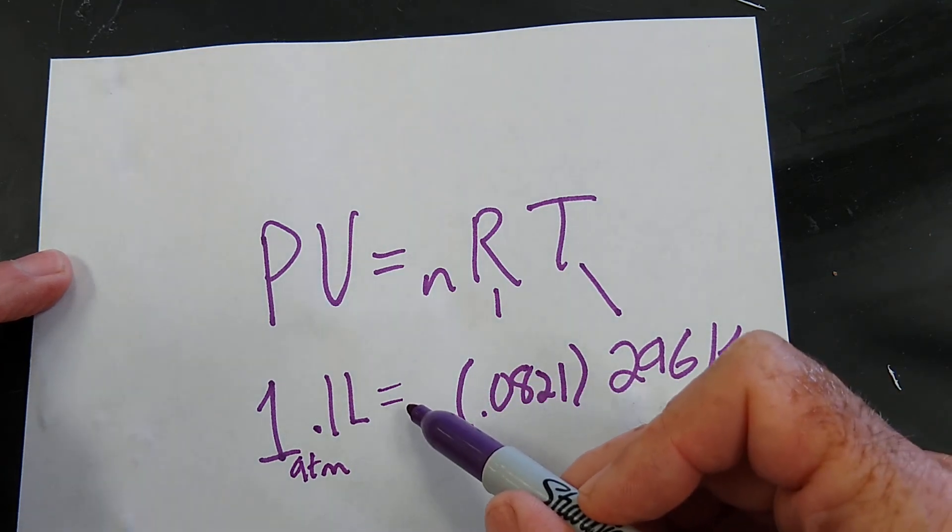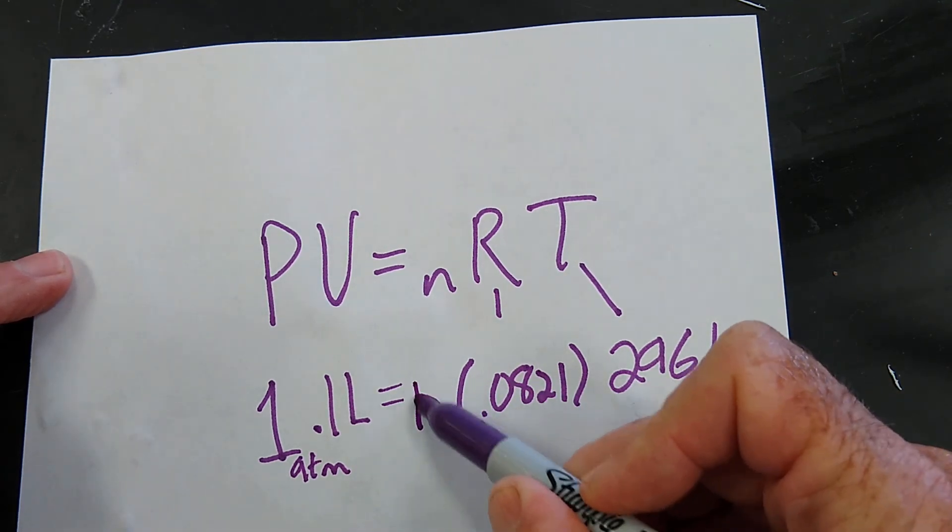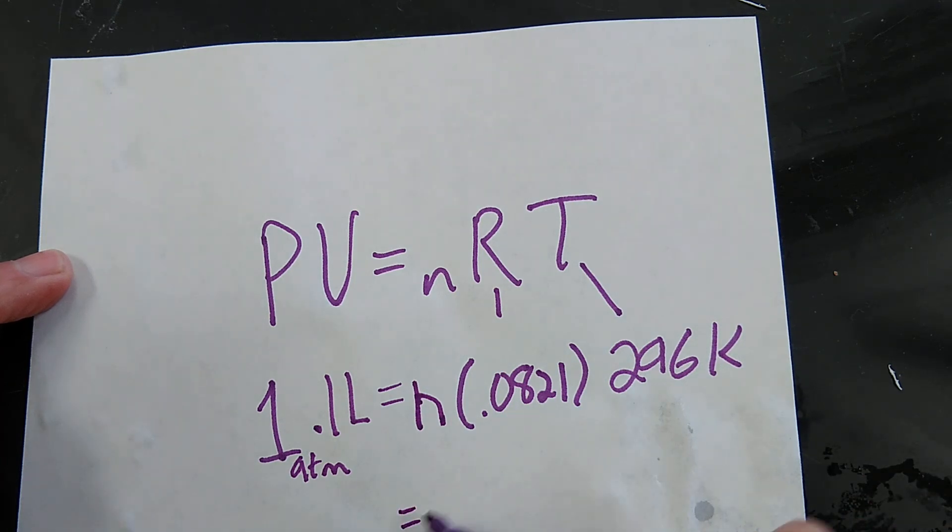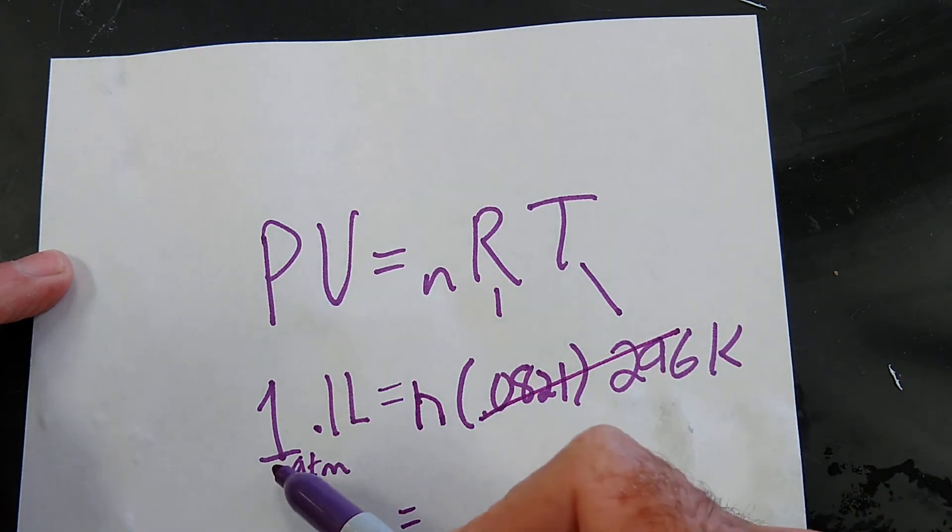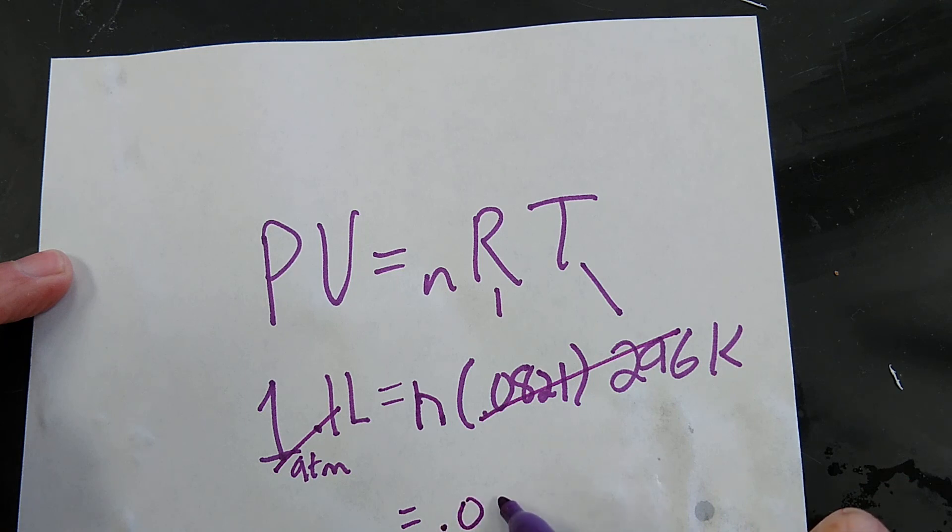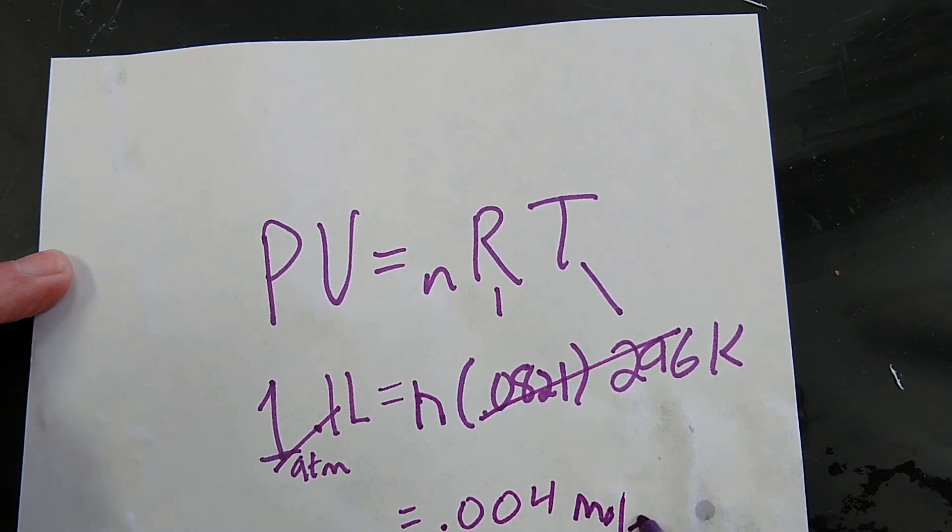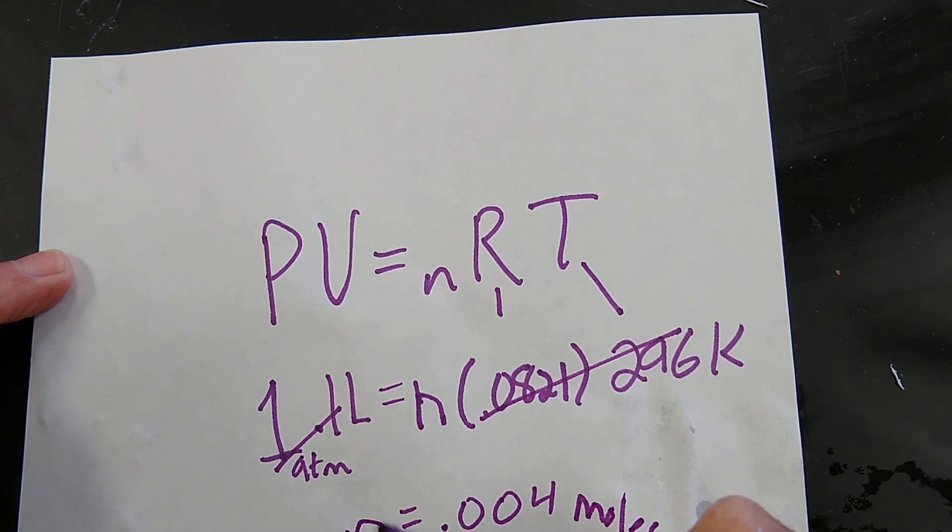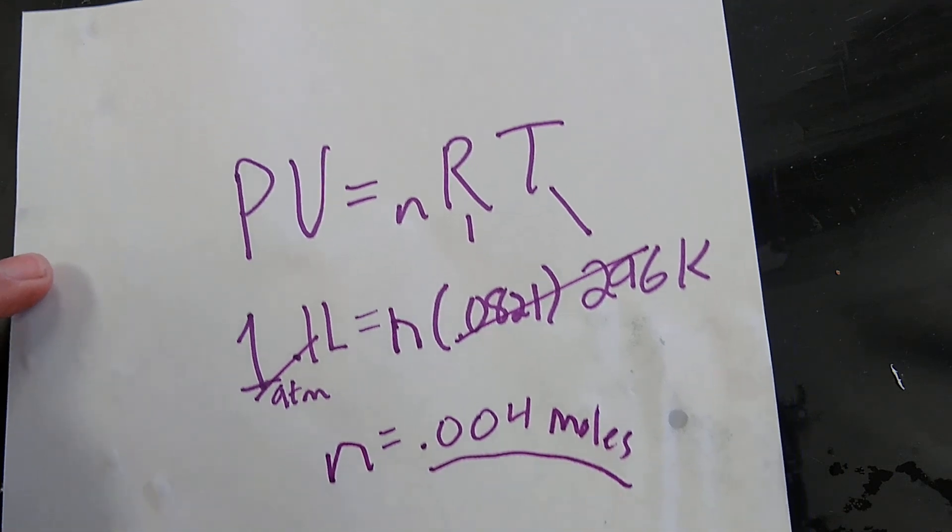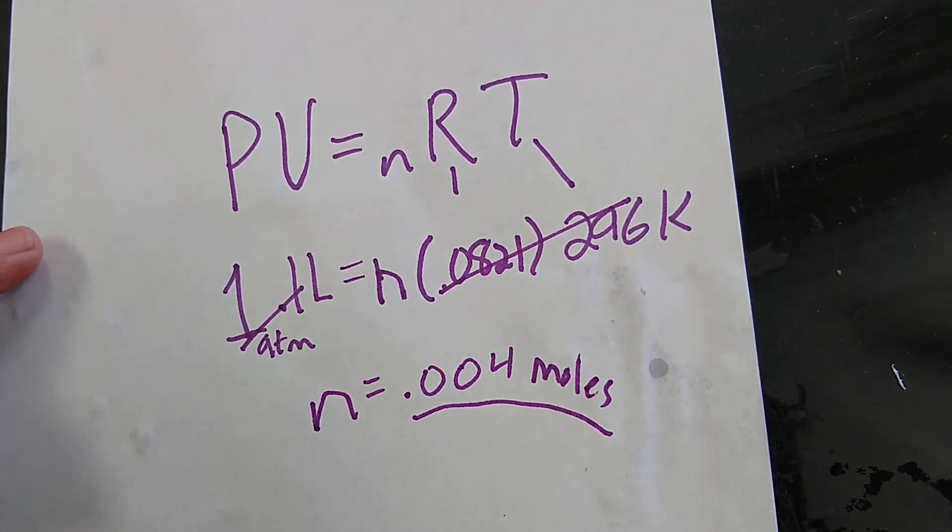Now we can solve for N, or how many moles are in there. If we move our numbers around, we get 0.004 moles. I just happen to already know this. So N is equal to 0.004 moles.